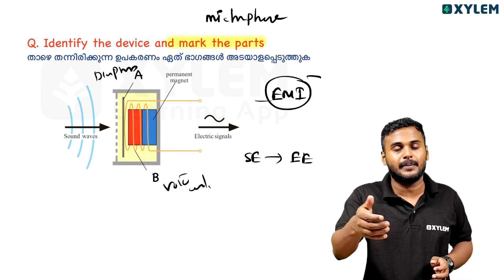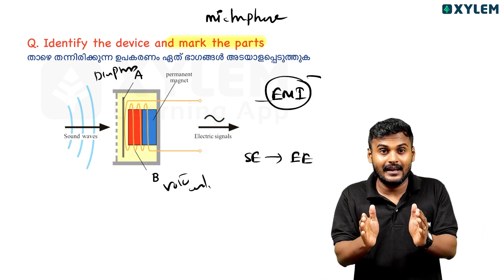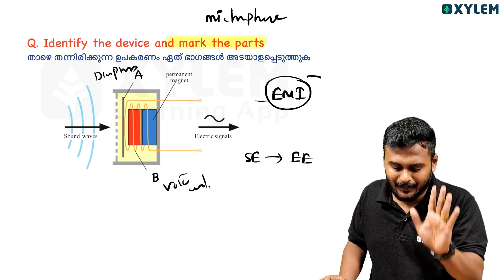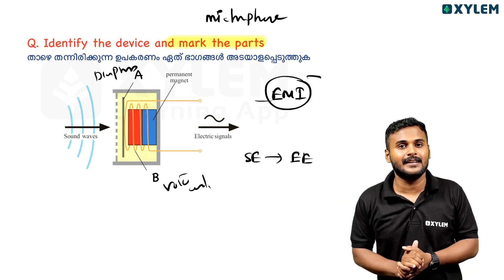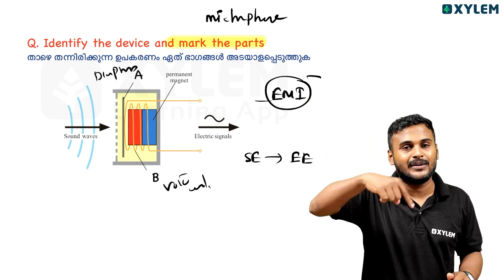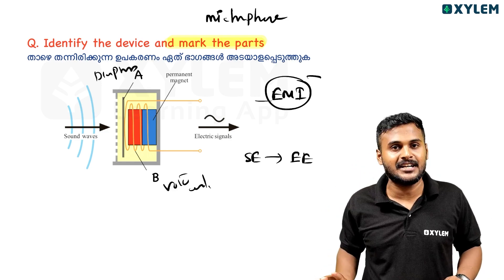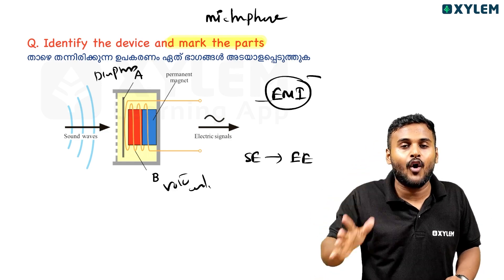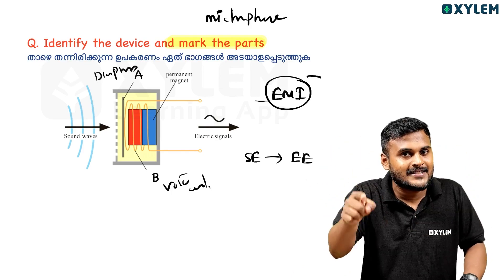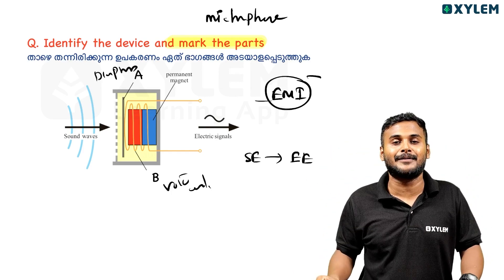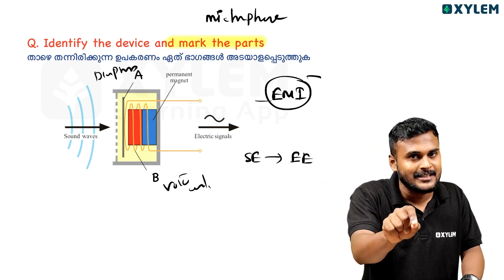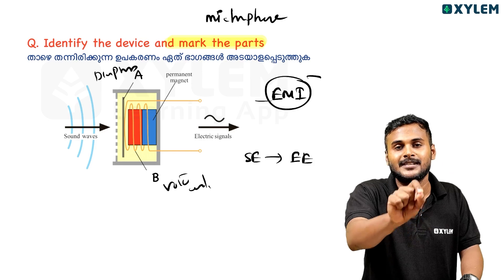The working principle is electromagnetic. Sound comes to the diaphragm. The diaphragm vibrates, causing the voice coil to vibrate. The vibrating voice coil in the magnetic field changes the magnetic flux, inducing an EMF, so current flows.